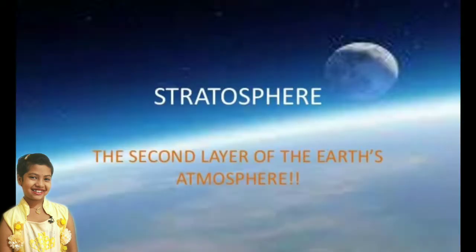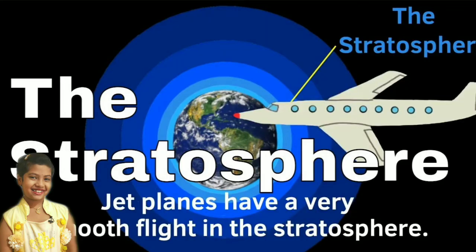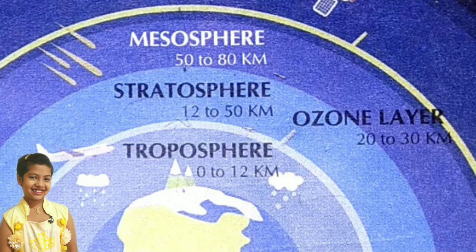Stratosphere. Stratosphere is the second layer of the atmosphere. Jet planes fly here as it is quite stable. The ozone layer present here absorbs the harmful ultraviolet rays of the sun that cause skin cancer.